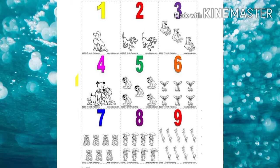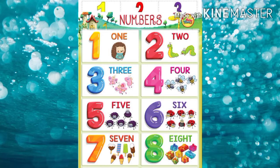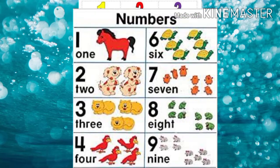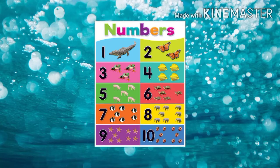Again look here. You can see 1 to 9 numbers and pictures. Those objects are related to the numbers. Count those objects and compare with the number. You can see 1 picture and there we wrote 1. Like that: 2, 3, 4, 5, 6, 7, 8, 9.